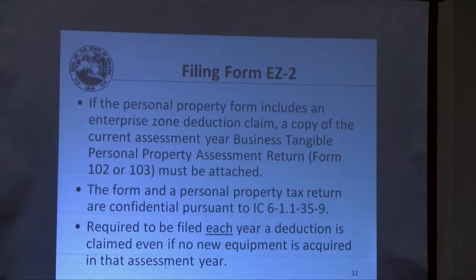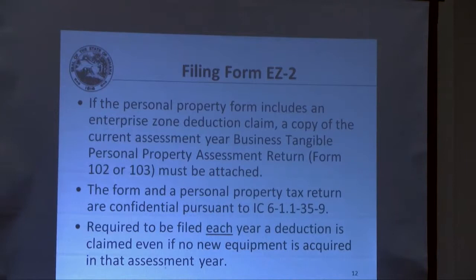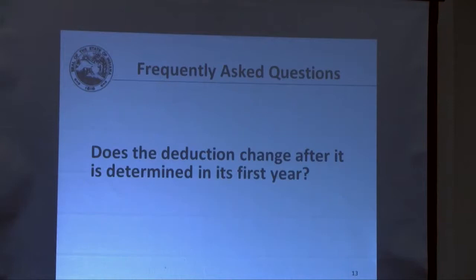Filing the form EZ-2: if the personal property form includes an Enterprise Zone deduction claim — in other words, if their EZ-2 is for personal property — a copy of that personal property tax return needs to be attached to the EZ-2. The form EZ-2 and the personal property tax return are both confidential pursuant to Indiana Code. The form EZ-2 is required to be filed each year a deduction is claimed, even if no new equipment is acquired, continuing through the full 10-year period.